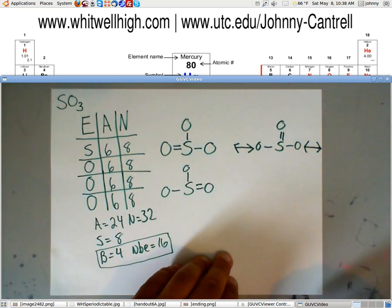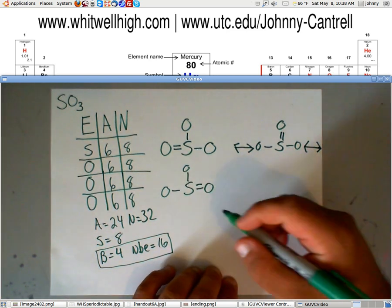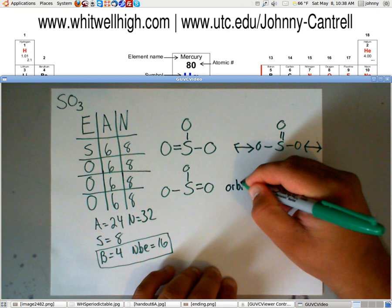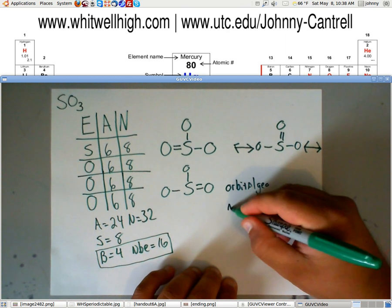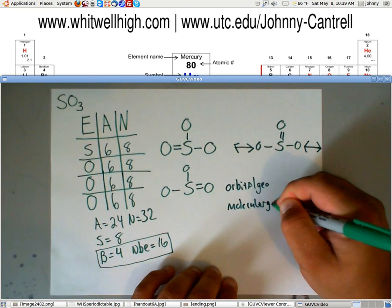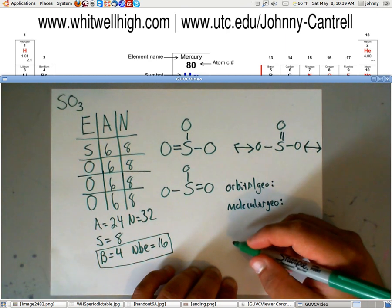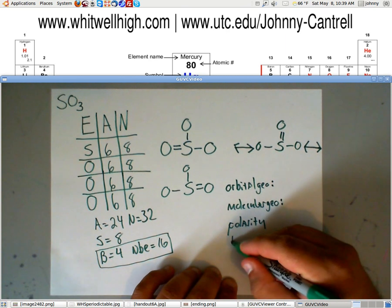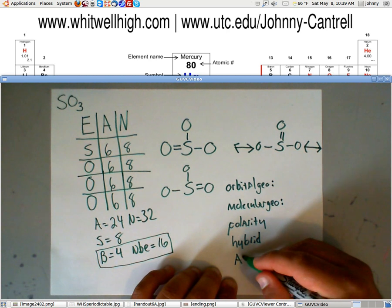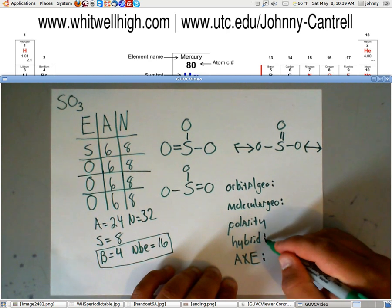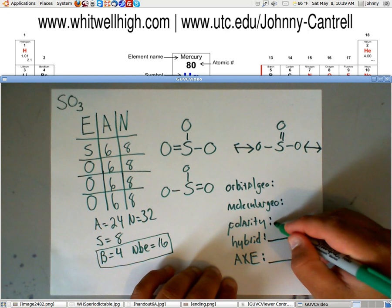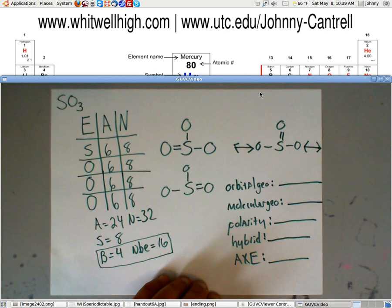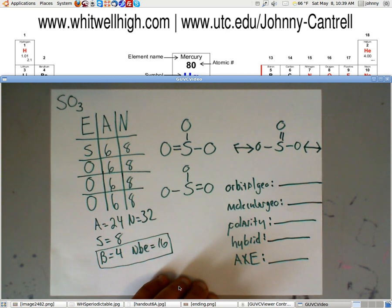Now, I didn't have to start it there. I just did. Okay. Now, we're done. All that's left is we need the following to be filled out because these are our drawings. We need the orbital geometry. We need the molecular geometry. We need the polarity. We need the hybridization. And we need the ax notation. Now, you'll use handout 6A to answer all these questions for you, but you'll need to memorize it.